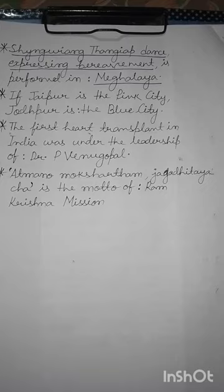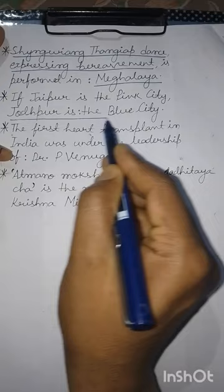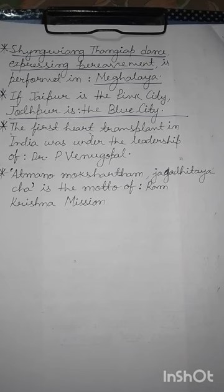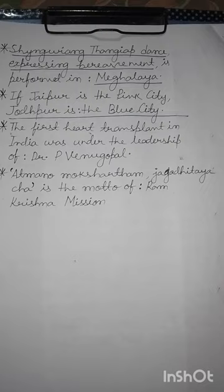If Jaipur is the pink city, Jodhpur is the blue city. This is because just as many buildings in Jaipur are painted pink, in Jodhpur many buildings are painted blue.